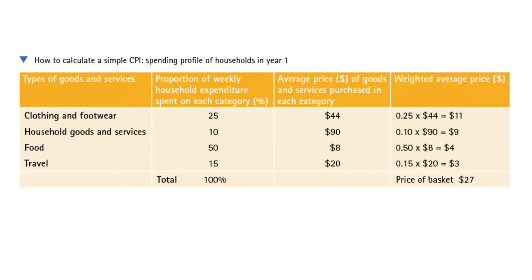In this example we have a number of different types of goods and services: clothing and footwear, which accounts for 25 percent of weekly expenditure; household goods and services at 10 percent; food at 50 percent; and travel at 15 percent. The average price of the goods are shown in the third column. To get the weighted average price for the fourth column, we multiply the percentage of the category by the average price. If we add all the weighted prices together we get the price of the basket. It may seem tricky, but work through a few examples and you will get it.